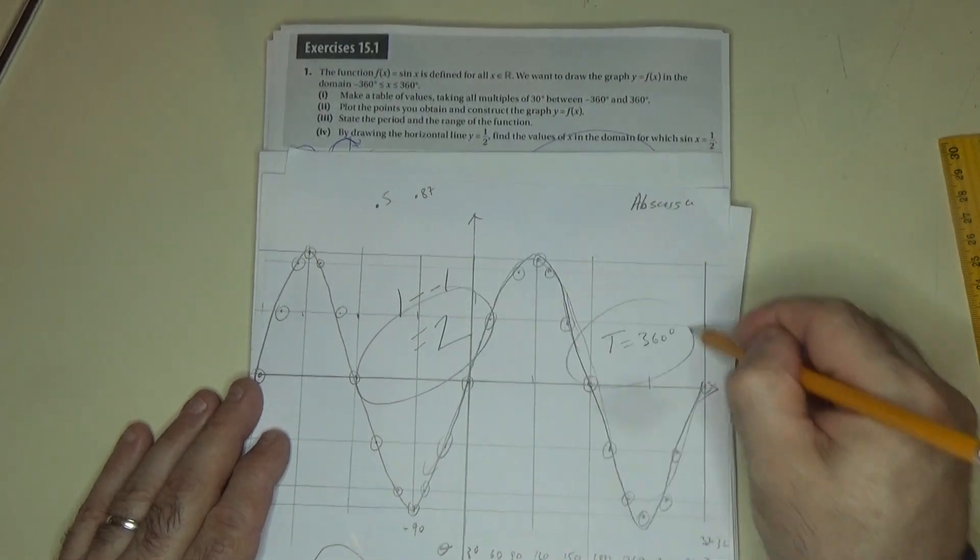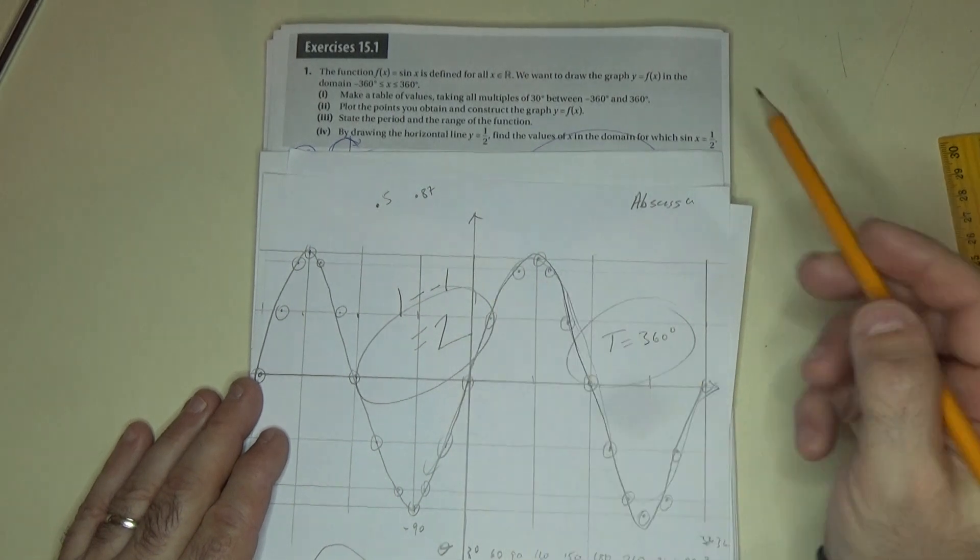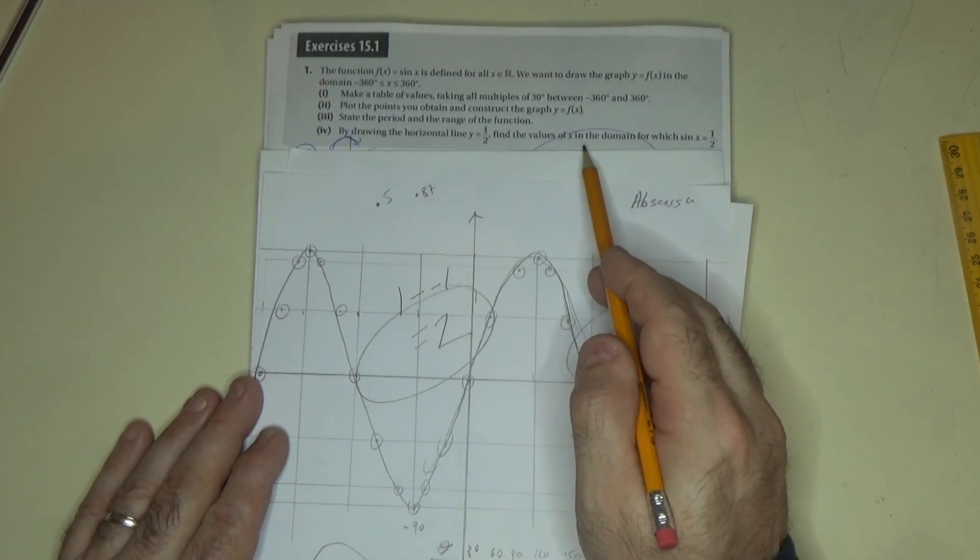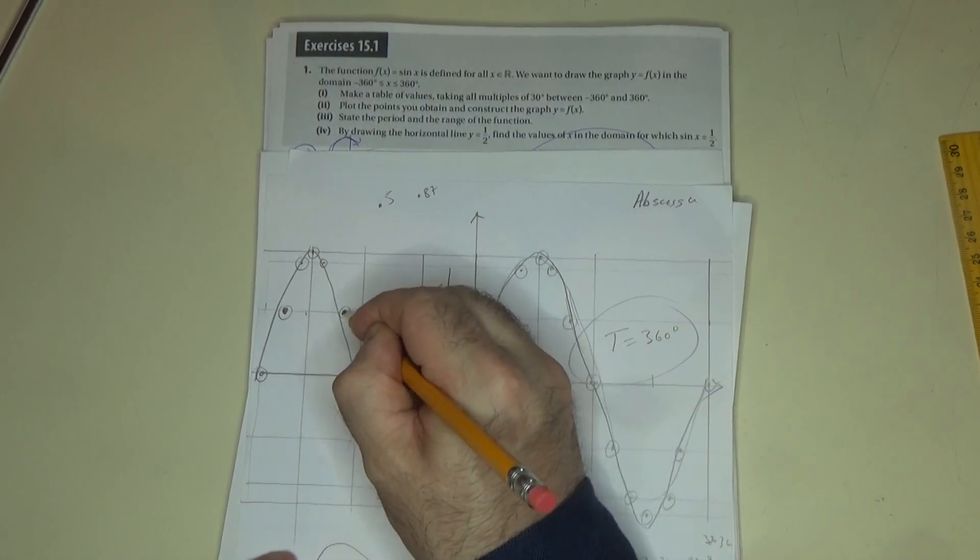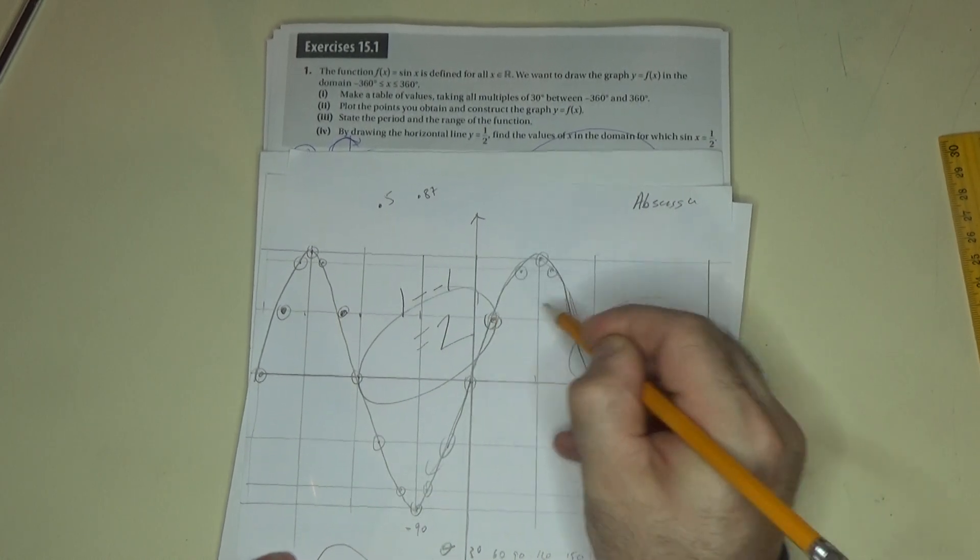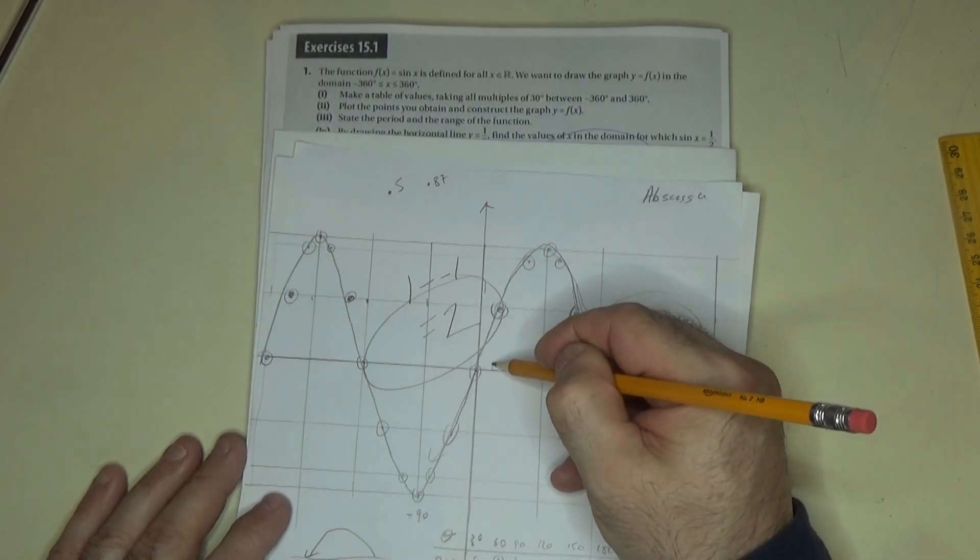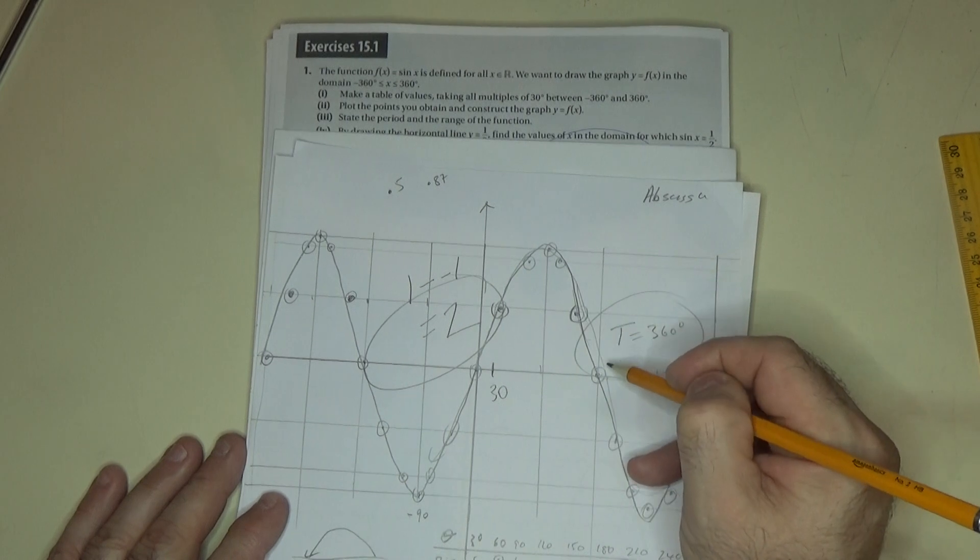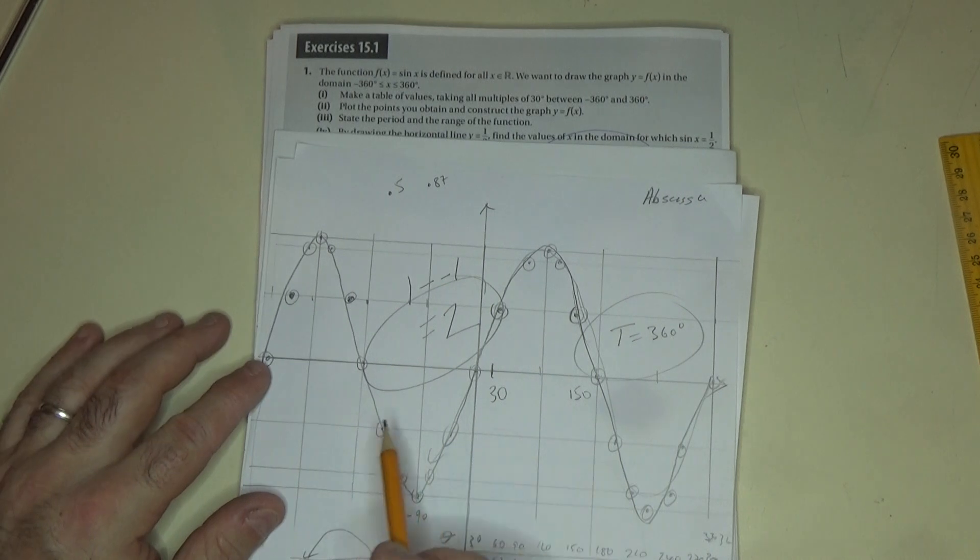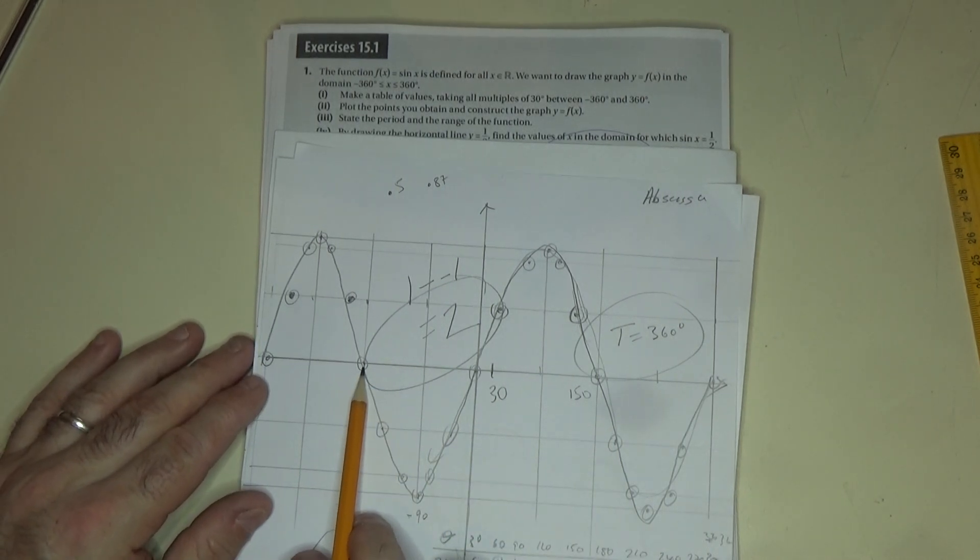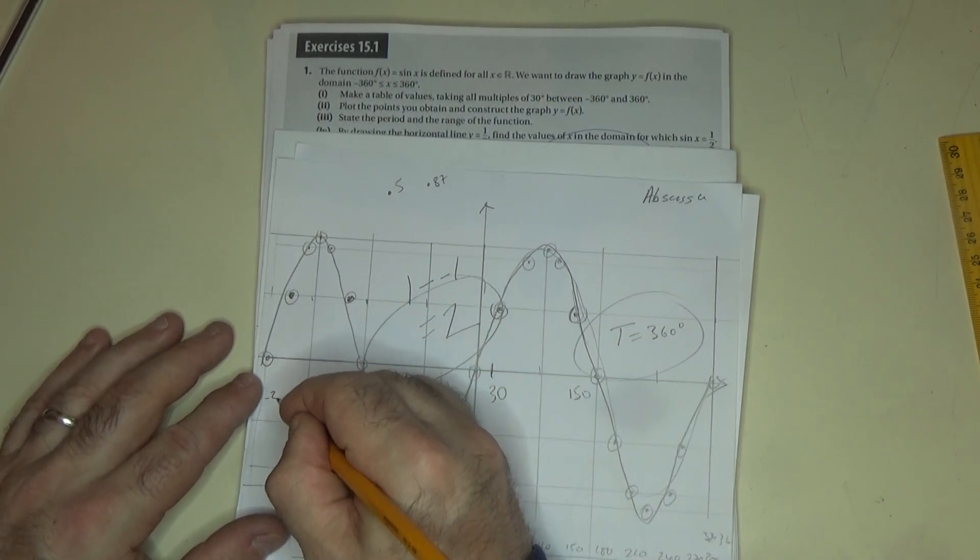The range is 2 and the period is 360. By drawing the horizontal line y equals a half, well I've done that here. Find the value of x in the domain for which sine of x equals a half. So what they're asking for is these values: one, two, three, and four. Those values are best read straight from the graph. They're at 30, 150. Now where am I here? I was already back negative 180, so negative 210, and here I'm at negative 330.